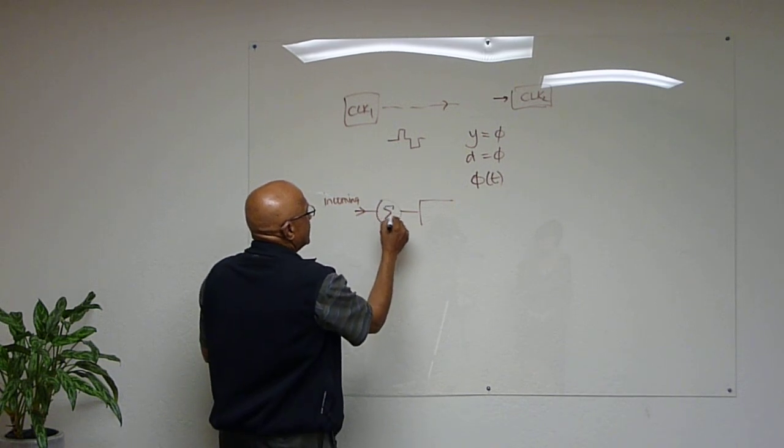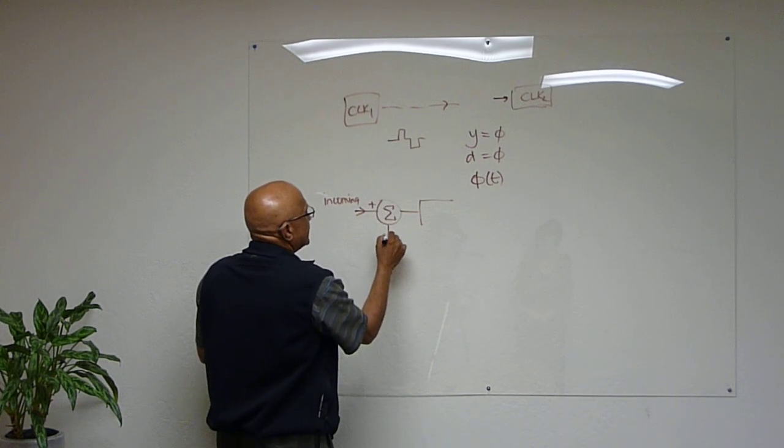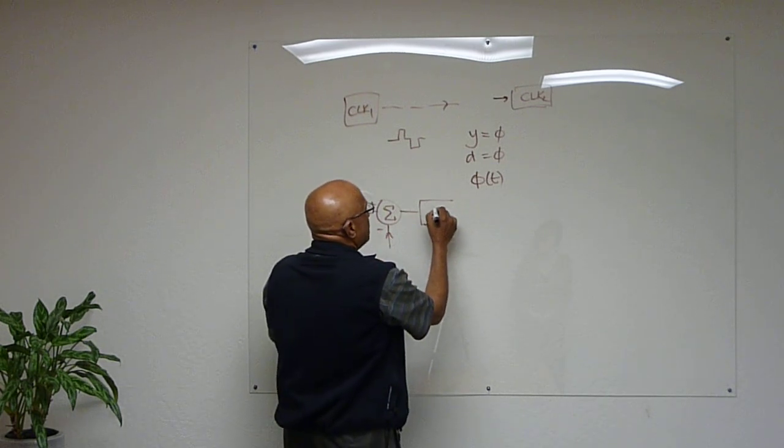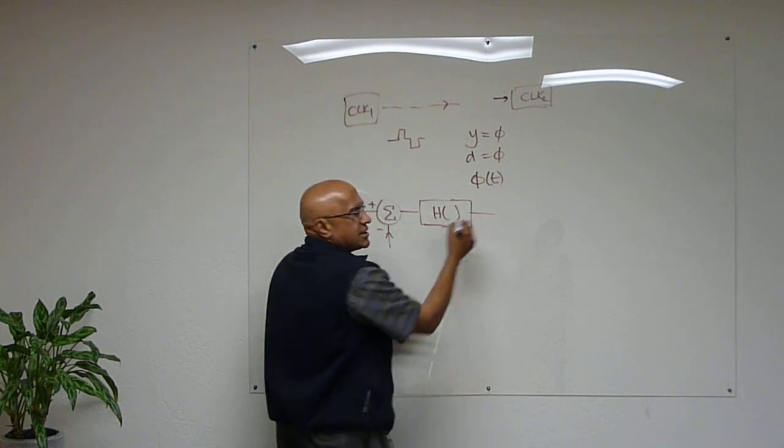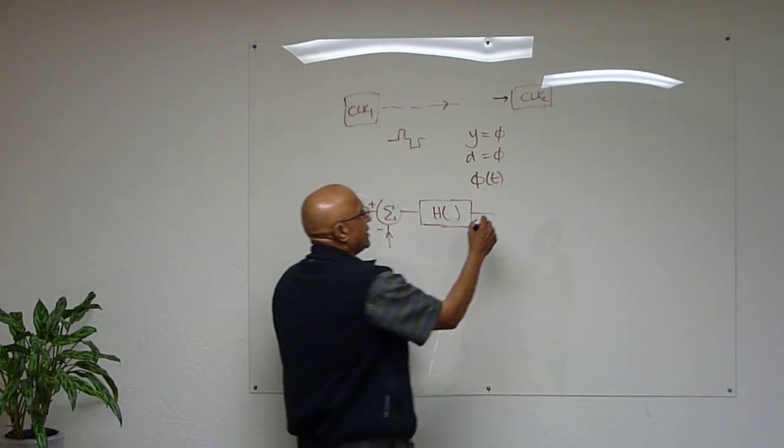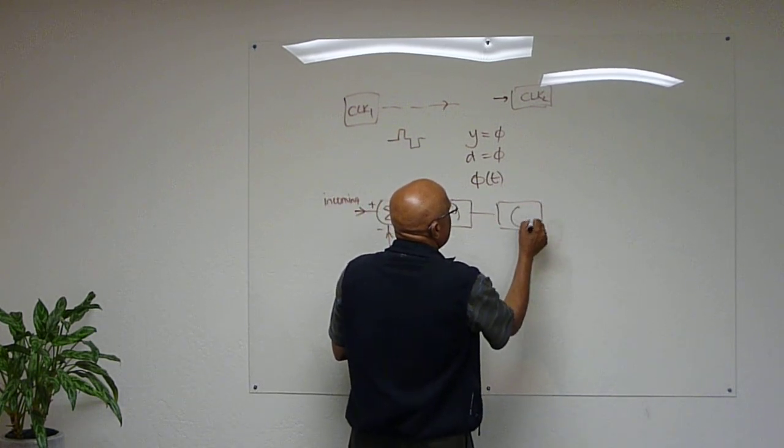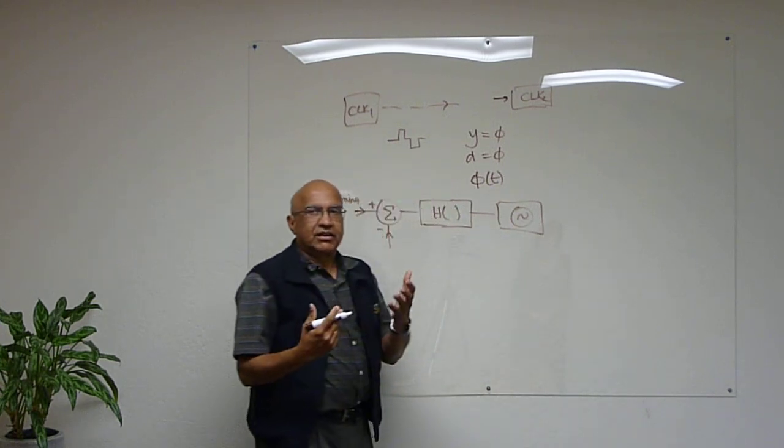So a plus and a minus. It takes this error, puts some kind of a filter, and uses that to control an oscillator. So here's an oscillator which, for lack of a better term,